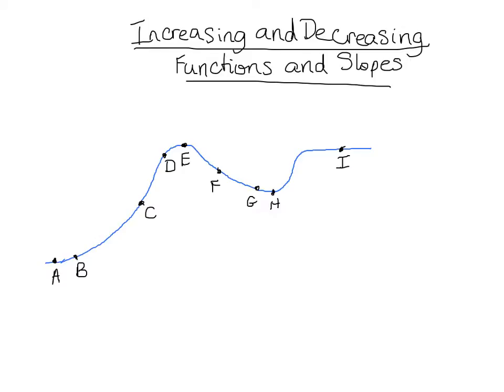An increasing and decreasing function is very easy to see once you know what you're being asked. If you're asked where is this function increasing, it's simply asking where is the graph going up. From A to B to C to D up to E the graph is going up, which means our function is increasing from A to E.